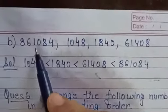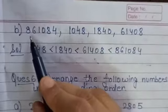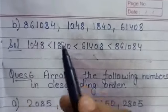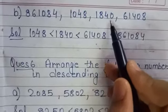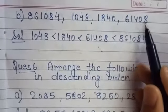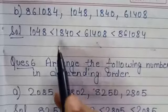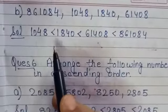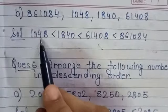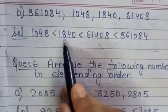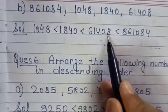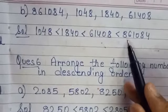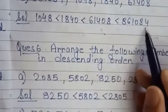Part B: 8,61,084; 1,048; 1,840; 61,408. In ascending order: 1,048 then 1,840 then 61,408 then 8,61,084.